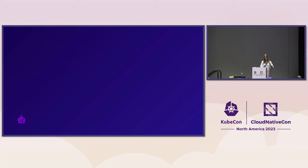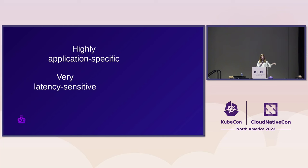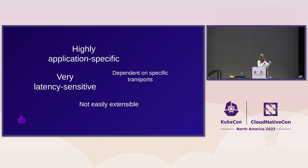If you combine these two approaches you get something resembling a remote memory solution, which is what we have ideas around. But even if these options exist, they are typically very application-specific — Qemu's live migration protocol, VMware's live migration protocol — they aren't adaptable to other use cases. They're also extremely latency-sensitive, designed for moves within a data center with maybe a millisecond of latency. They don't work over the public internet and they depend on specific transports like RDMA.